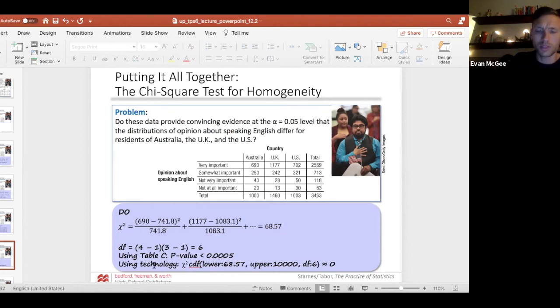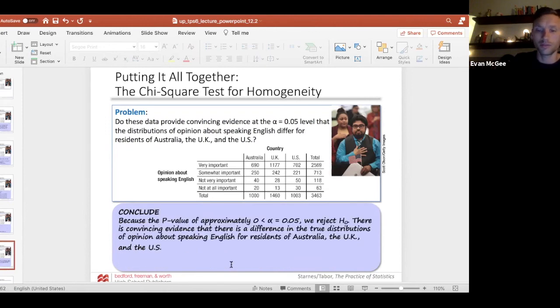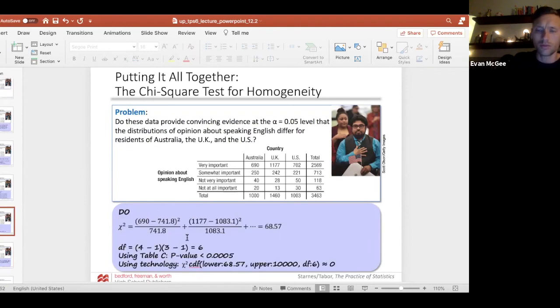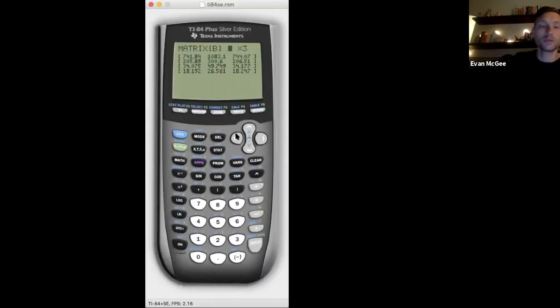Which I showed you on the calculator, you can use technology. So the chi-square CDF function that you learned previously, or you can just use what the calculator gave you. These were the expected counts. If I go to stat, calculate, tests, there it is, chi-square test.